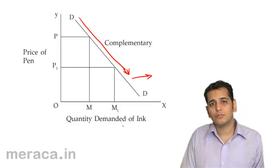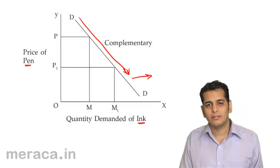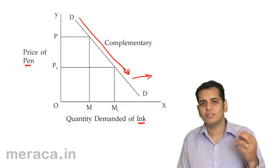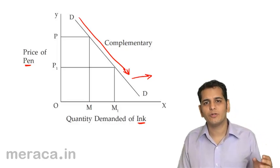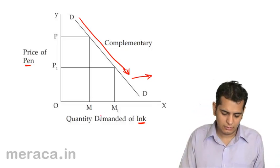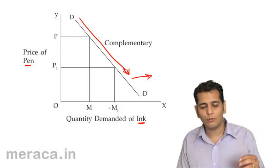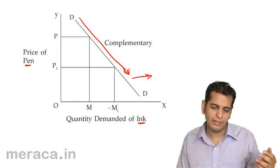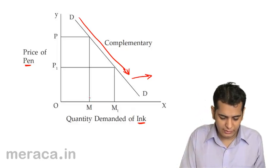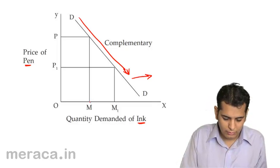We have taken two complementary goods: ink and pen. Ink has its demand derived from pen — it is a good which derives demand from pen, so we call the demand for ink derived demand. This means the more pens are consumed, the more ink is consumed, and fewer pens means less consumption of ink. Let's see why this gives the curve a downward slope.